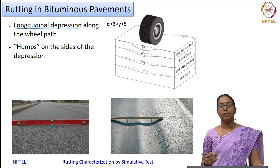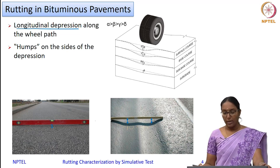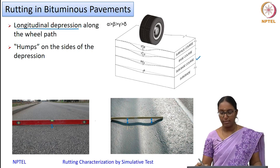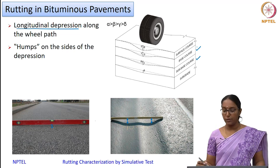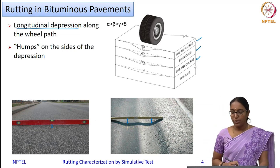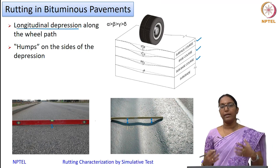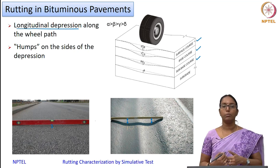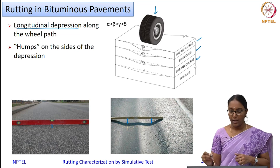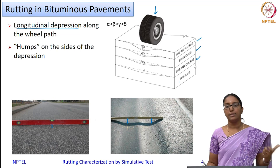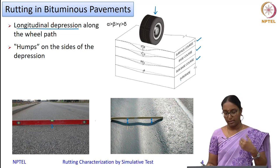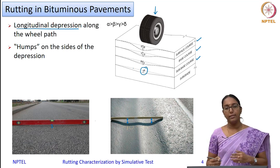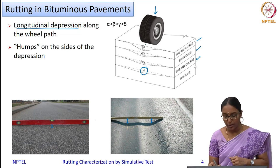When you look at a bituminous pavement, it comprises of different layers. You have the subgrade soil at the bottom, then granular layers which are your subbase and base layers, and then the top surface course which is bituminous in nature. These are all mixes which are prepared, laid, and compacted, and there is every possibility that all of these layers will undergo certain amount of deformation under wheel load. The bottom subgrade, being granular in nature, has a tendency to deform, and other layers including the top layer will also show certain deformation.